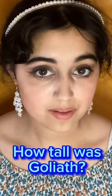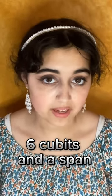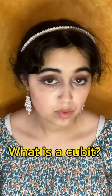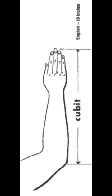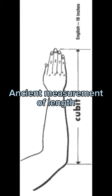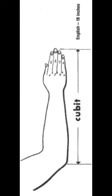How tall was Goliath? Well, the Bible tells us that he was six cubits and a span. So we have to ask, what is a cubit? According to the Oxford Dictionary, a cubit was an ancient measurement of length, approximately equal to the length of a forearm.